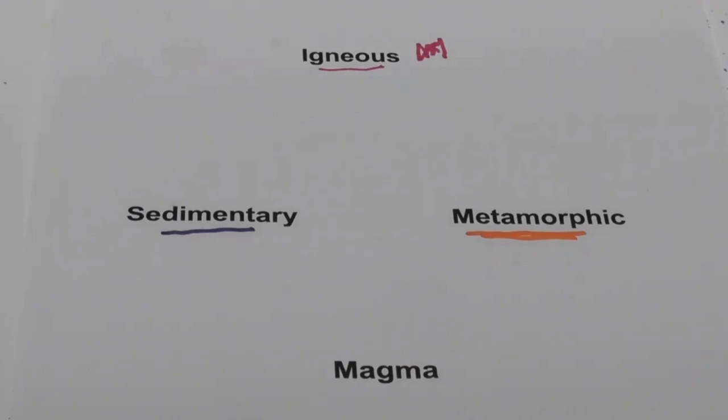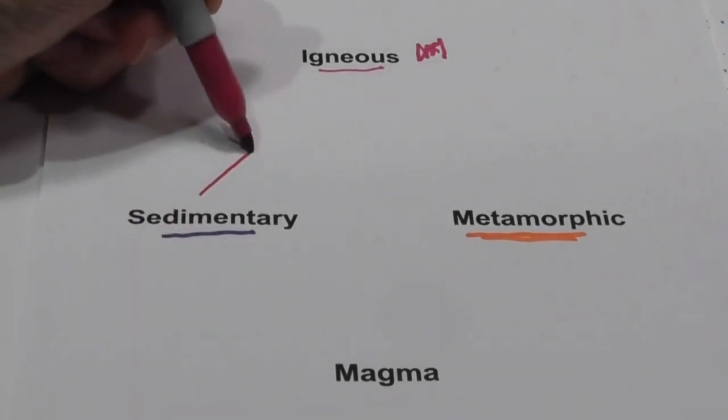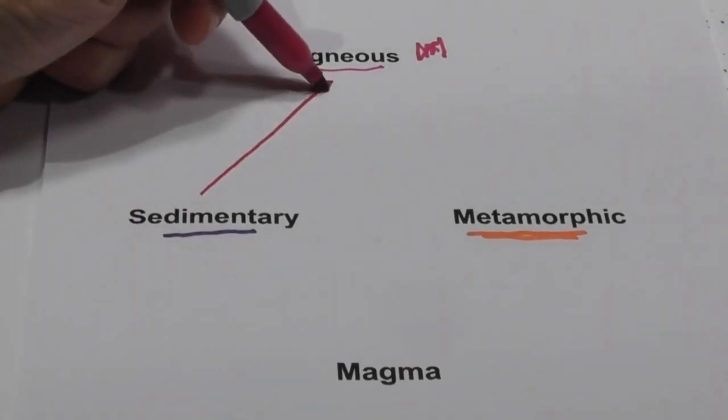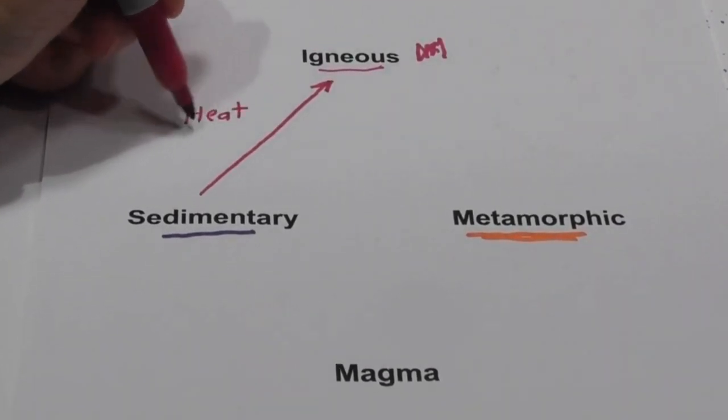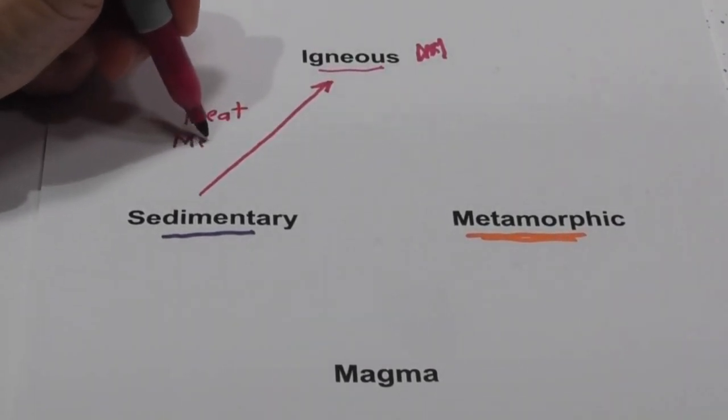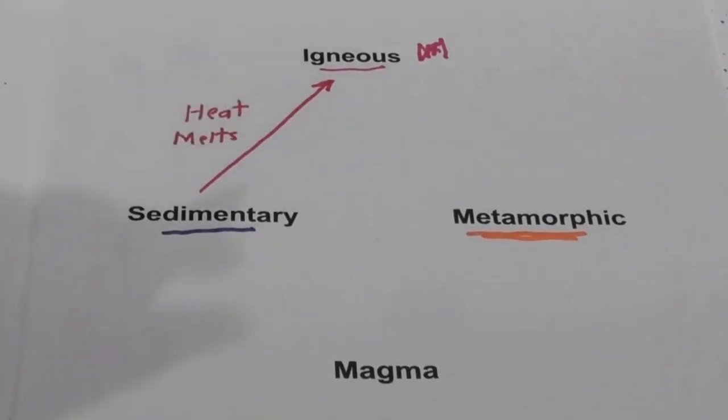How does a sedimentary rock become an igneous rock? And I'm going to use this color on purpose because it requires heat and it actually melts. Now, the igneous rock can be intrusive or extrusive. If it melts, if it cools on the surface, it's extrusive. If it cools inside the earth, it is intrusive.